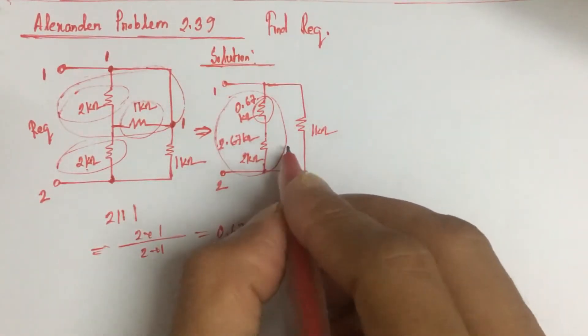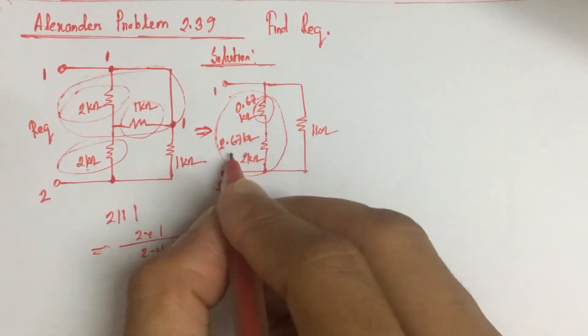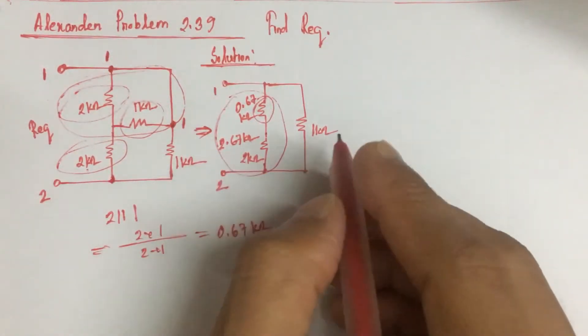If we determine the total resistance, now this is parallel value of 2.67 kilo ohm and 1 kilo ohm.